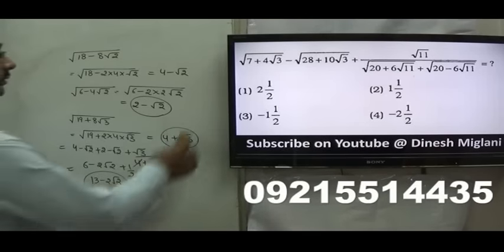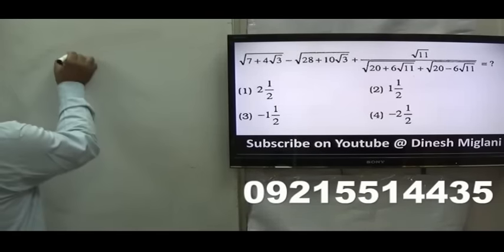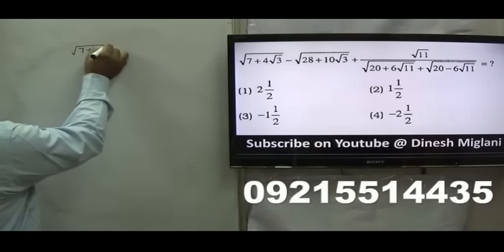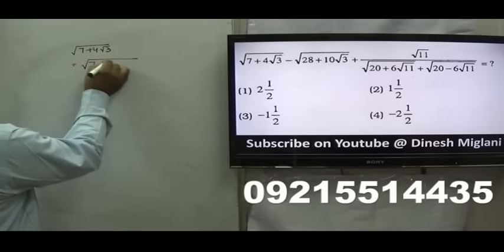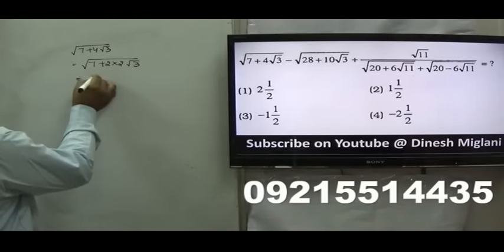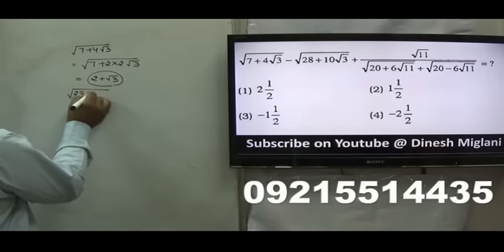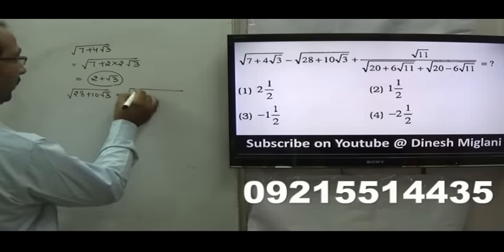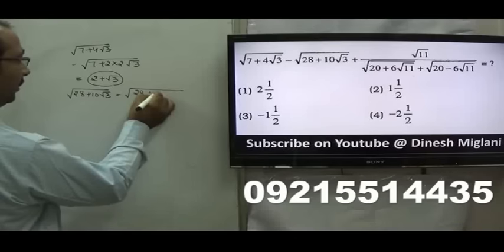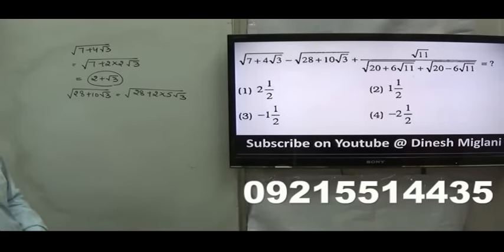Next question, a similar type problem — we just complete the squares. First, we take √(7 + 4√3), which is √(7 + 2·2·√3). We know 2² = 4 and (√3)² = 3, so 4 + 3 = 7. We can say that is 2 + √3. Similarly, √(28 + 10√3) is taken as √(28 + 2·5·√3). Here 5² = 25 and (√3)² = 3, so 25 + 3 = 28, giving 5 + √3.